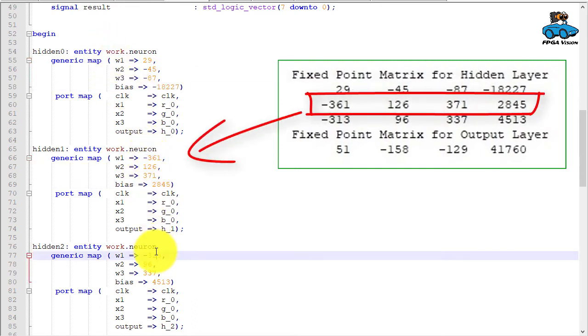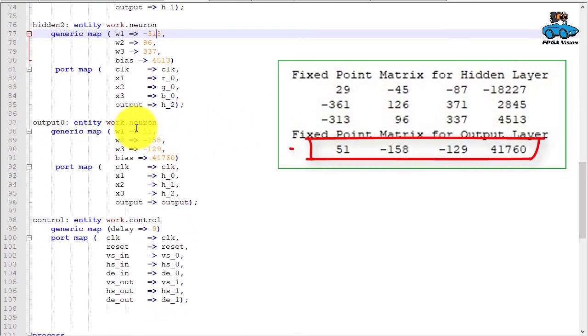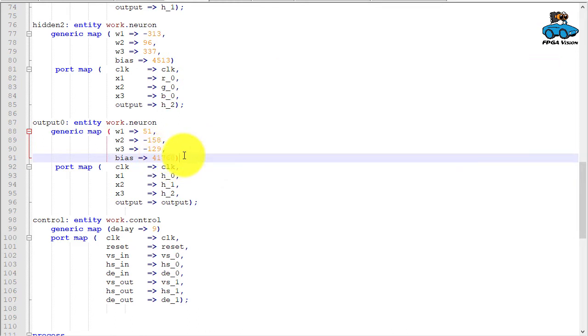These are the values for the neuron in the hidden layer. This is the next neuron. Here is the output layer again with the parameter from the octave script. This is the control block for delaying the sync signals.